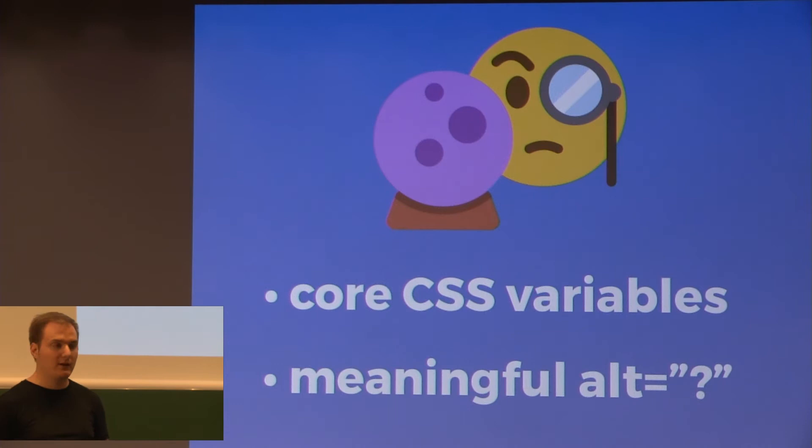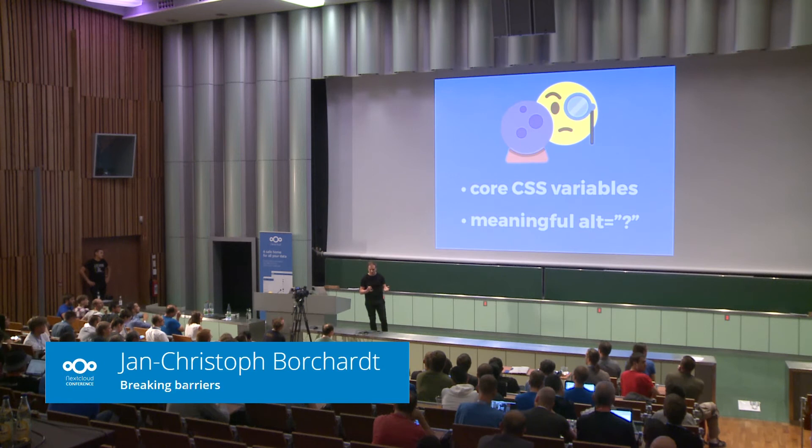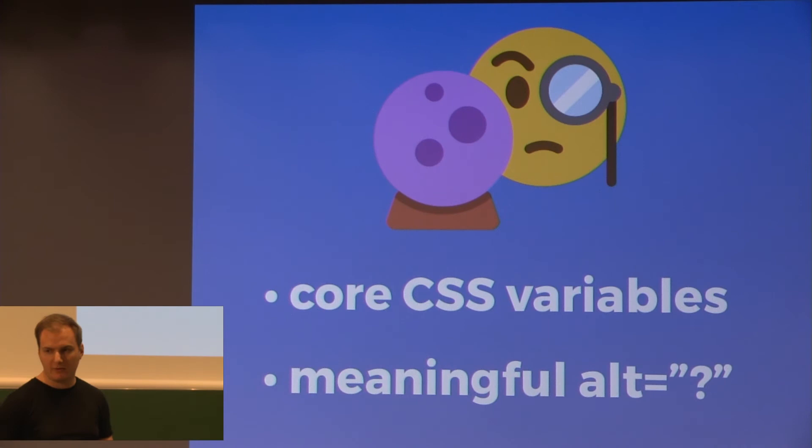Another thing is having meaningful alt text. These extensions will often tell you there's no alternative text, meaning you have the alt tag missing. Oftentimes the only thing needed is an empty alt tag — for example, for decorative images. But whenever there's an icon with an action, like an edit icon with no text next to it, you need an alt tag with explanatory text like 'edit' or 'edit comment'.